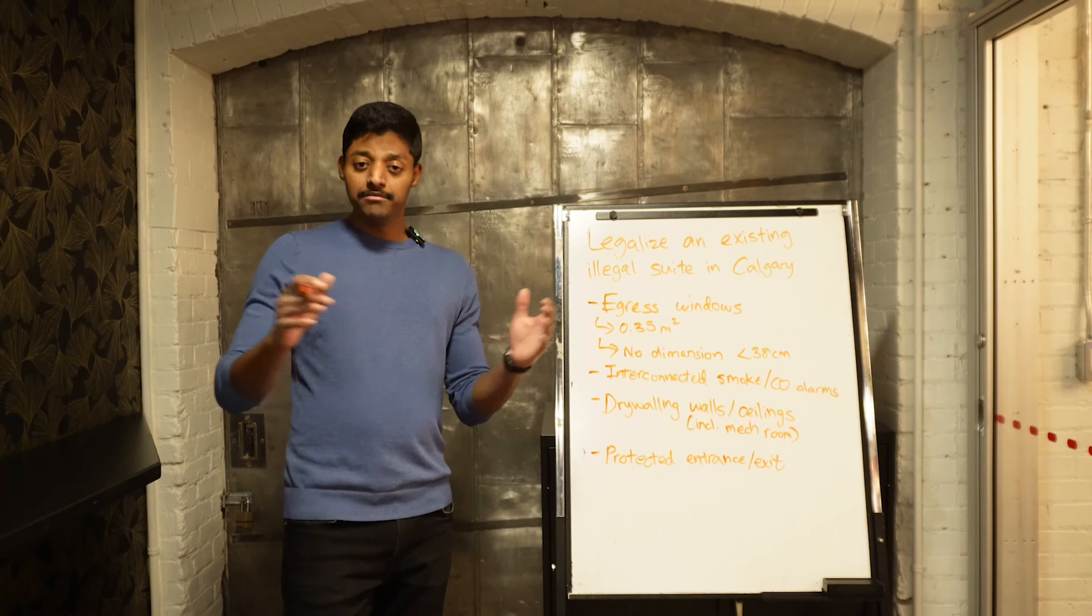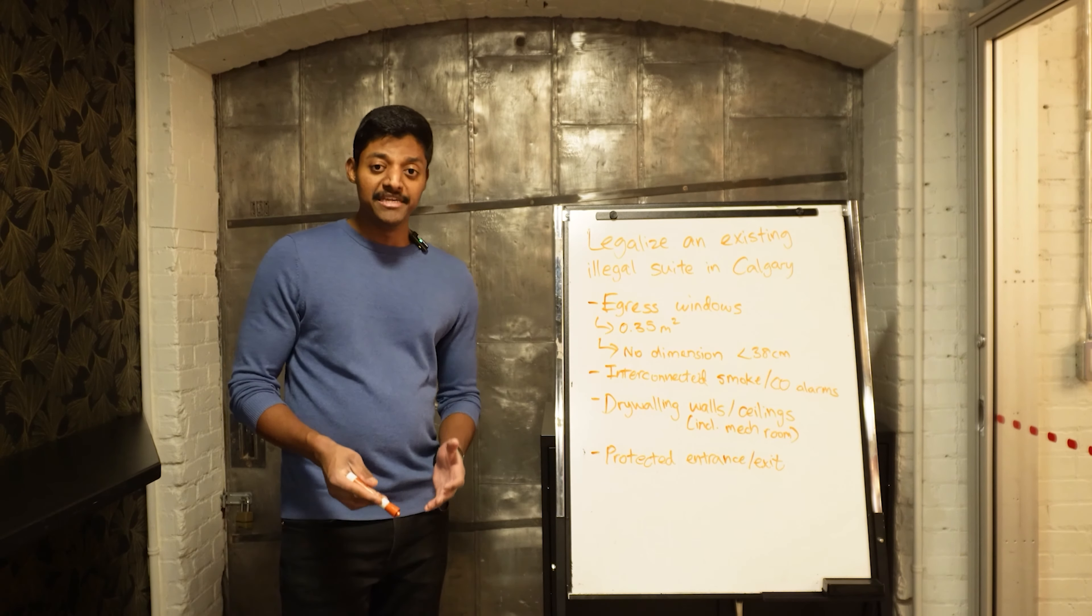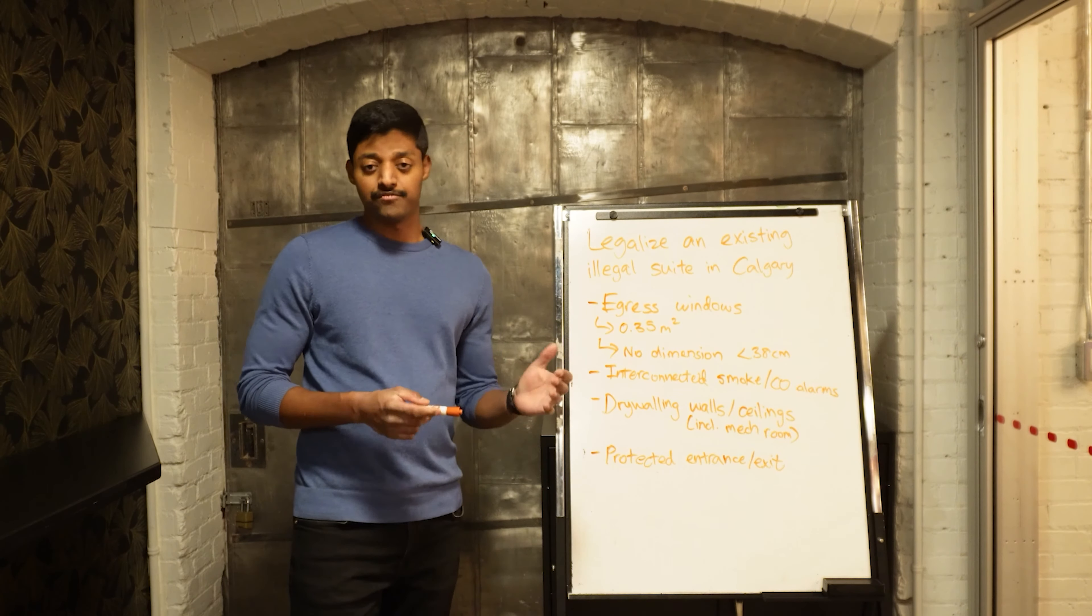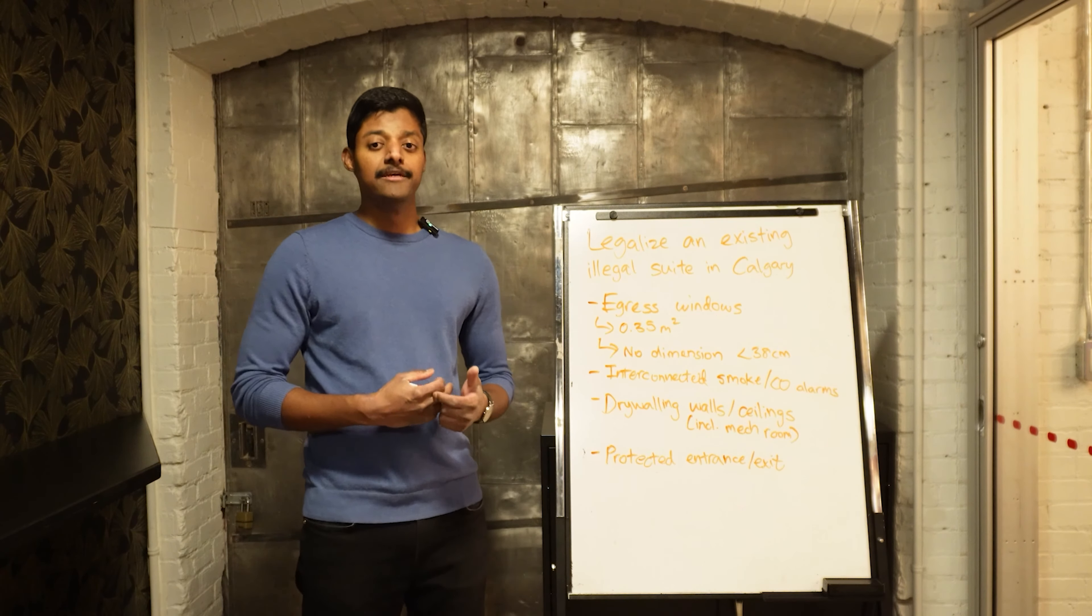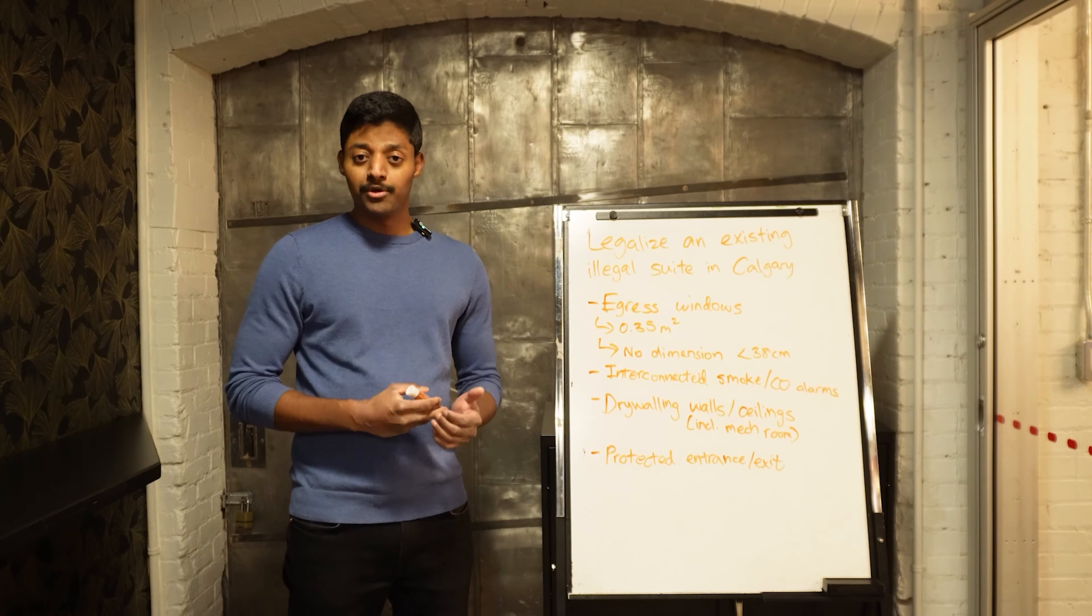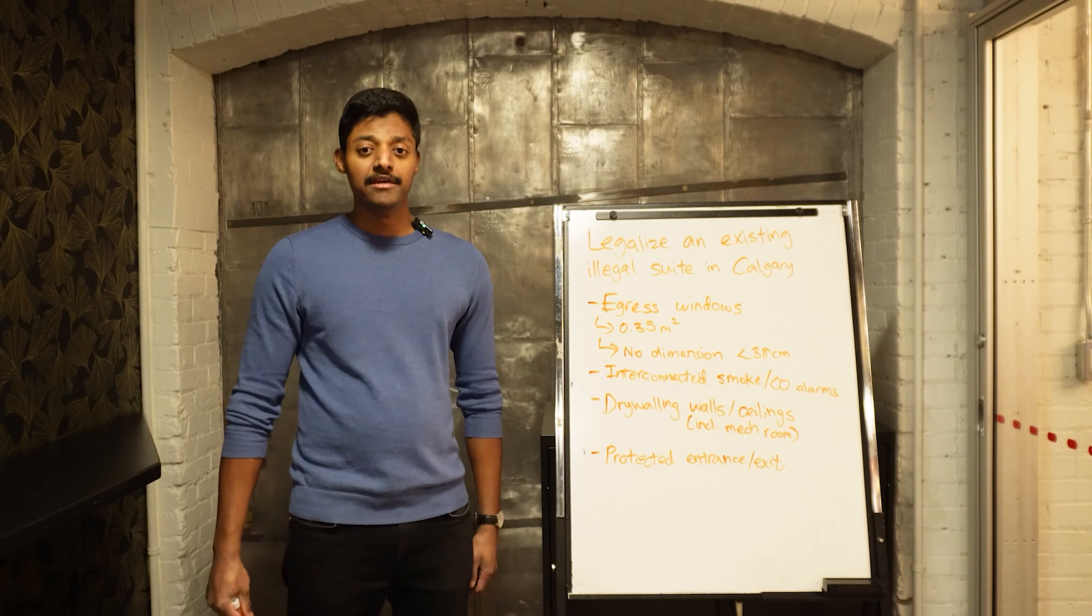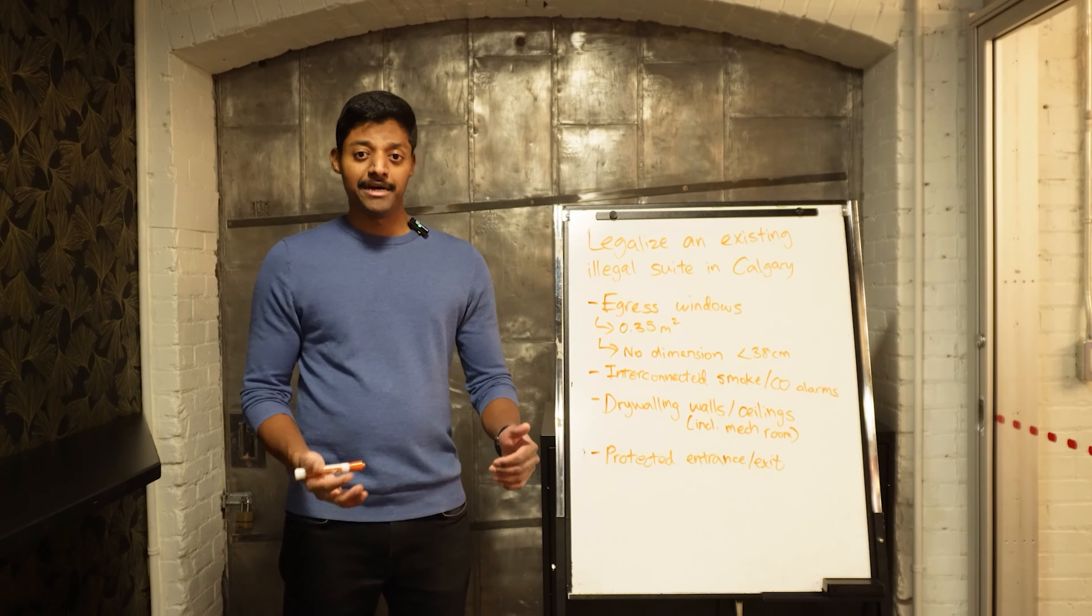Now let's move on to the interior of the property and look at what the city is going to require to legalize your existing illegal suite. First things first would be your egress windows. The openable area of your window has to be at least 0.35 square meters with no dimension less than 38 centimeters. That's roughly 15 inches minimum dimension on either side.